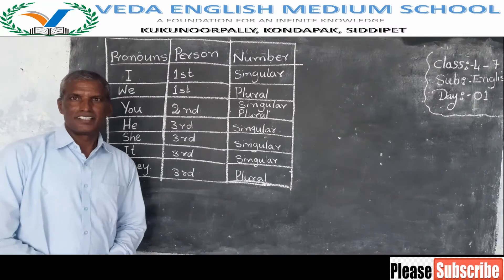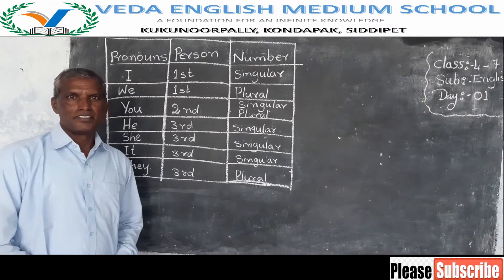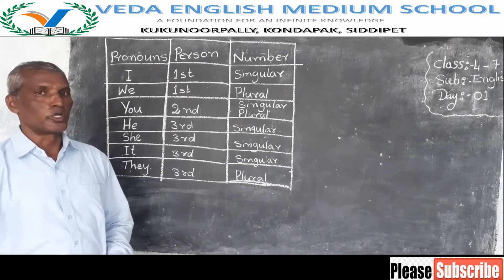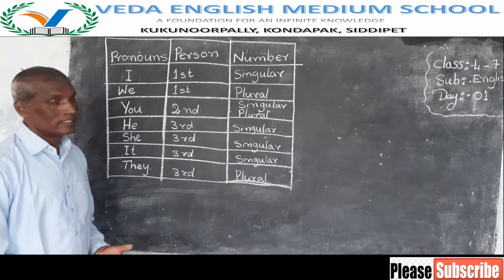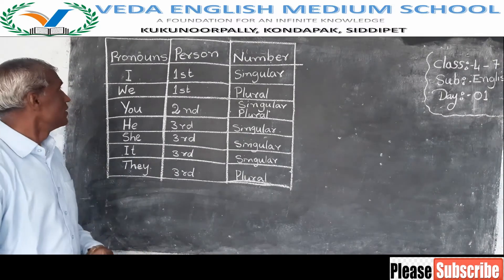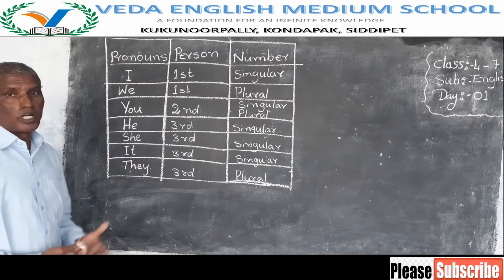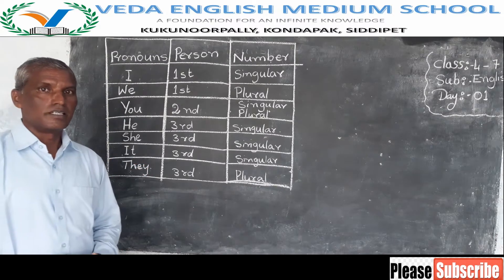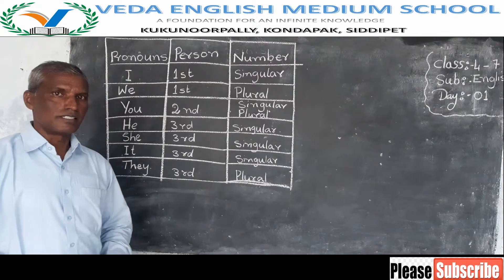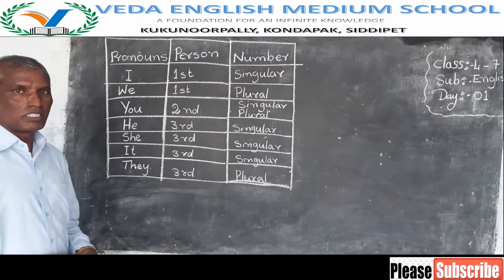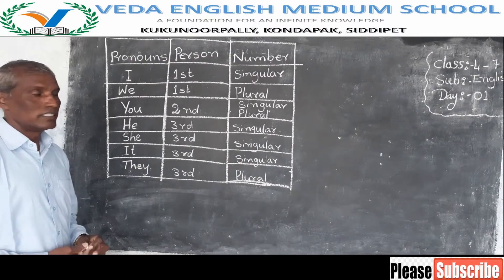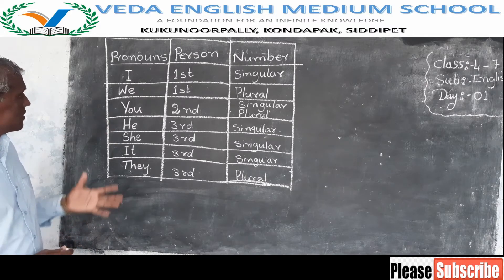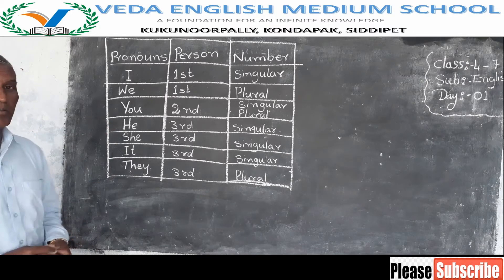Dear students, today we are going to learn about pronouns, person and number. Pronouns are used instead of nouns. In the case of nouns, we use pronouns. There are seven pronouns.